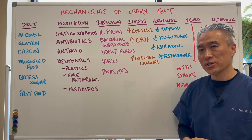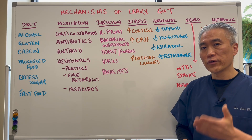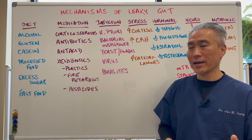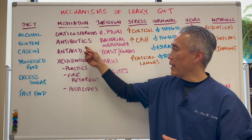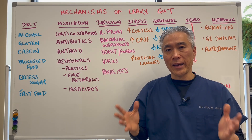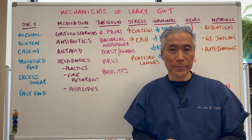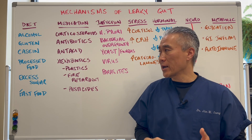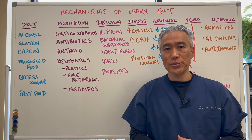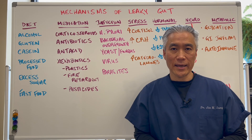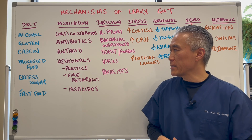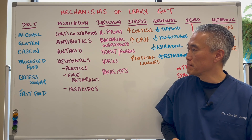Medications like steroids or overuse of steroids will damage the gut lining. Antibiotics will damage gut bacteria and the lining. Antacid use or prolonged antacid use can also create leaky gut.